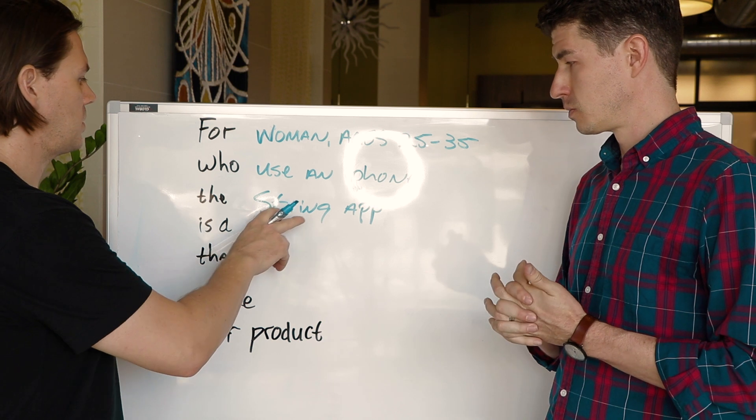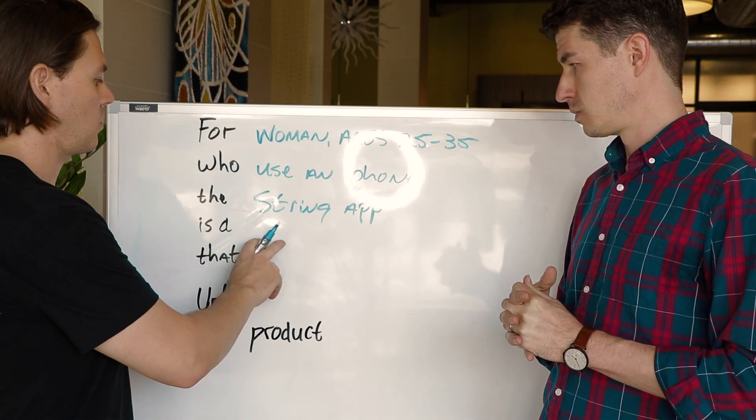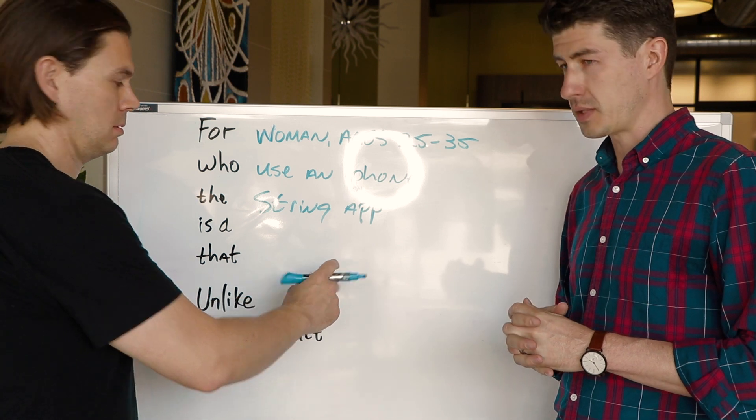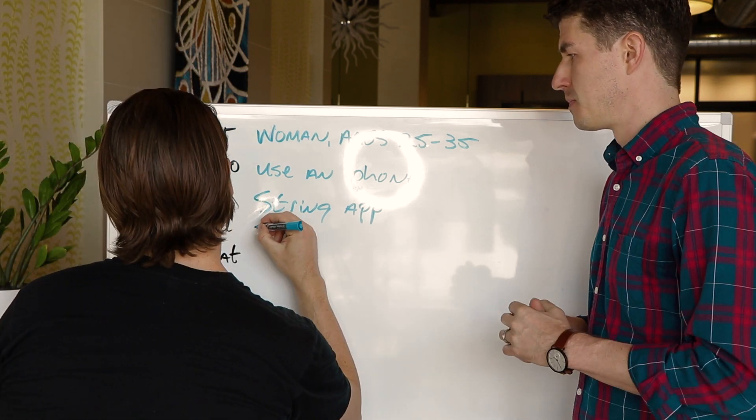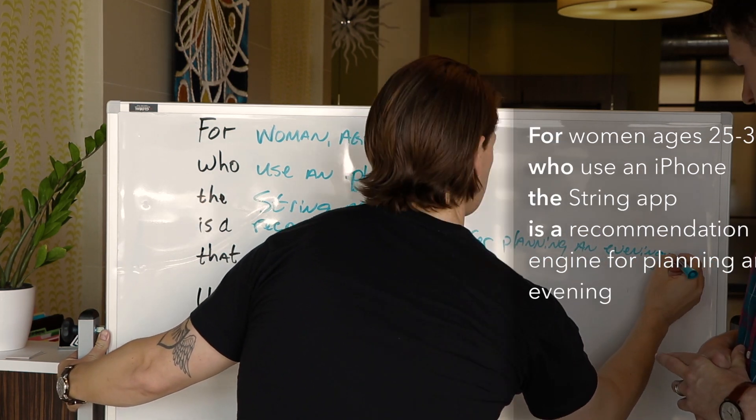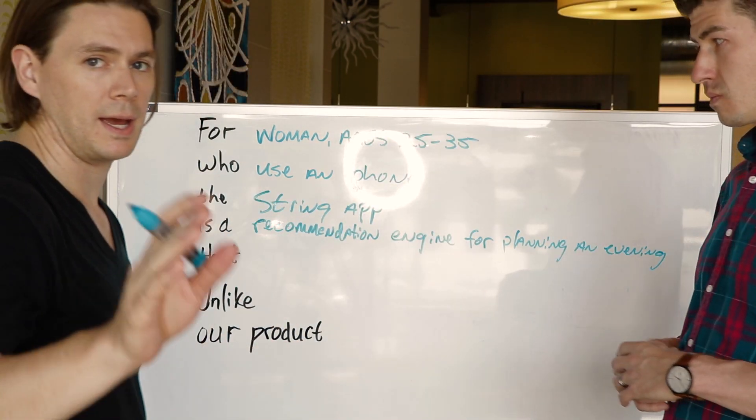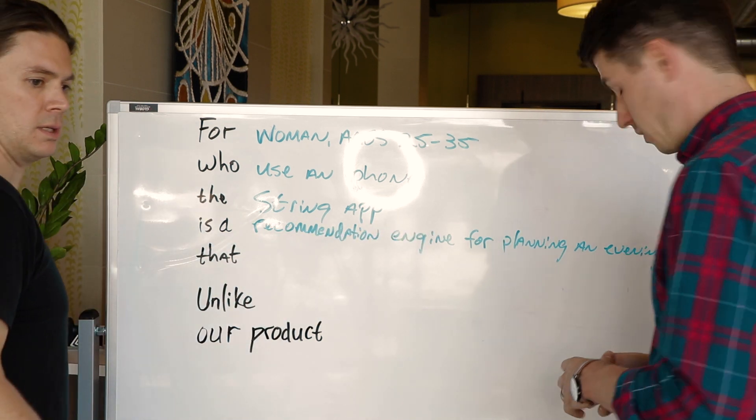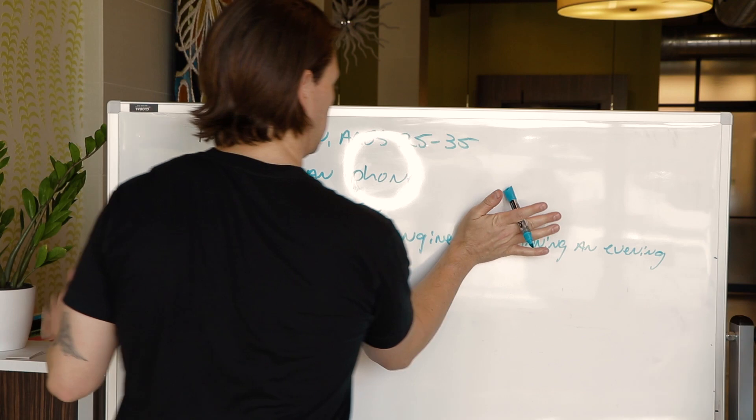What if we say the String app is a recommendation engine for planning an evening? I think that's great. Better yet, we could just say it's a recommendation engine that helps you plan an evening. Great.